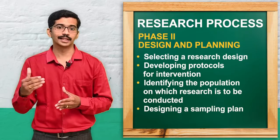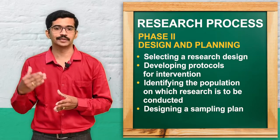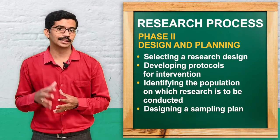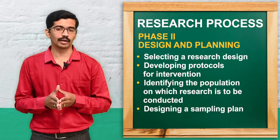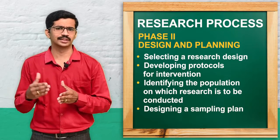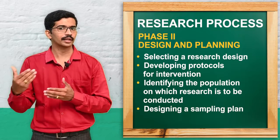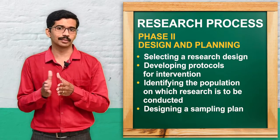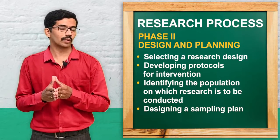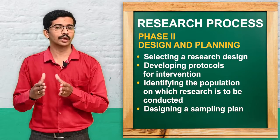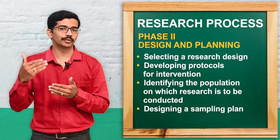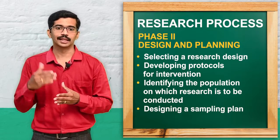Moving to the second phase — the design phase. It starts with the research design, which is the overall plan or blueprint of the research. There are different types: qualitative design, which relates to non-numerical data, and quantitative design, which involves numerical data. We will decide which type of design to use in this designing phase.